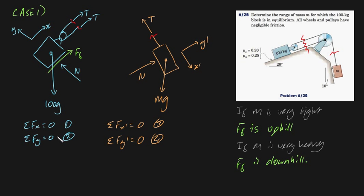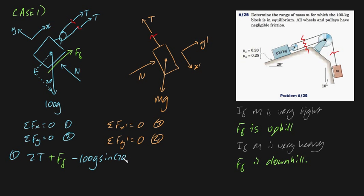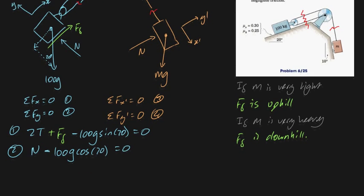We're ready to start solving analytically. For equation 1, the sum of forces in the x direction: we have 2T from the tension forces, plus our friction force in the tangential direction x, minus the component of gravity — which we can prove by geometry is at 20 degrees — so minus 100g sine 20, equals zero. For equation 2, the normal force is purely in the y direction, minus 100g cosine 20 equals zero. Now we're at a crossroads because we don't yet know what our friction force is.